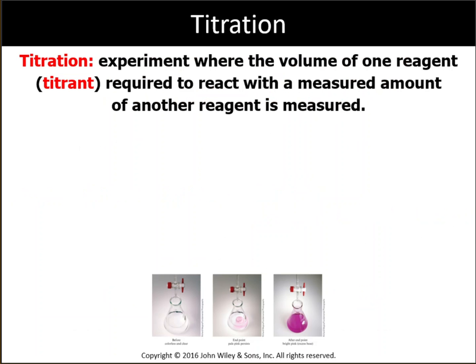Titration is a method used to either identify an unknown acid or base — finding the molar mass of an acid or base — or to find the concentration of an acid or base based on a neutralization reaction. Titration is an experiment where the volume of one reagent, called the titrate, required to react with a measured amount of another reagent, is measured.